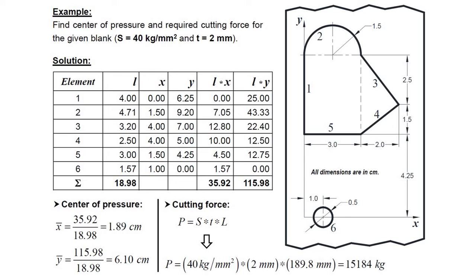Let's see an example — a similar example has been asked in previous university examinations. We have been asked to find the centre of pressure and the cutting force required for the given blank. We can divide the cutting contour into different elements. In this basic strip, element 1 goes from here to here, element 2 is the semi-circular portion, element 3 goes from here to here, element 4 from here to here, element 5 is next, and the complete circular blank is considered element 6. So there are 6 elements in total.